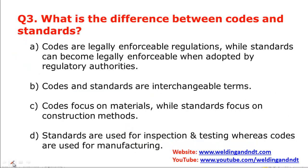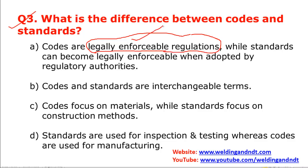Question number three: what is the difference between codes and standards? These two terms are often used interchangeably, but there is a difference. Codes are legally enforceable regulations — whenever a country or company adopts a code, it becomes legally enforceable. For example, if a country adopts ASME Section 8 Division 1 for pressure vessel manufacturing, that becomes a code. Standards can become legally enforceable when adopted by a regulatory authority; if a regulatory authority adopts a standard, that standard becomes a code.